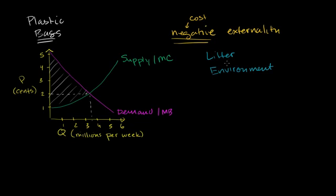And so they hire some experts. And this is not an easy thing to do. But it's determined that the negative externality of these plastic bags is 2 cents per bag. Or another way to think of it, the cost to society and the environment above and beyond the marginal cost to the producers is 2 cents per bag.